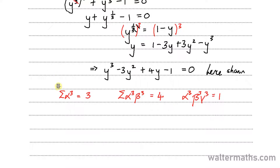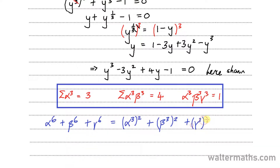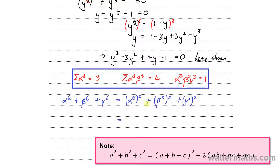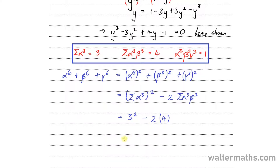We might need this information a bit later. Now for us to work out alpha to the power 6 plus beta to the power 6 plus gamma to the power 6, we can say that is the same as alpha cubed squared plus beta cubed squared plus gamma cubed squared. By considering this algebraic relationship, that is the same as the sum of roots squared minus 2 times the sum of product of pairs. Sum of roots here is 3, so that's 3 squared minus 2 times 4. So 9 minus 8 gives us 1. That's how we answer this type of question.